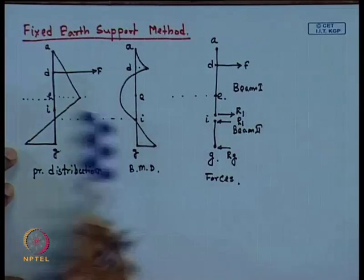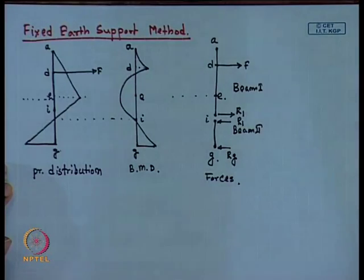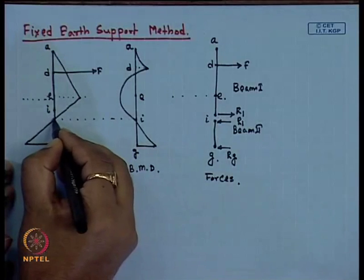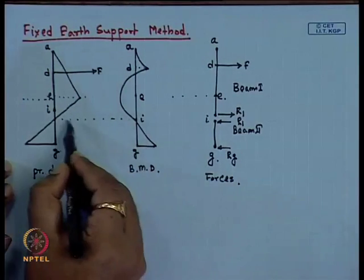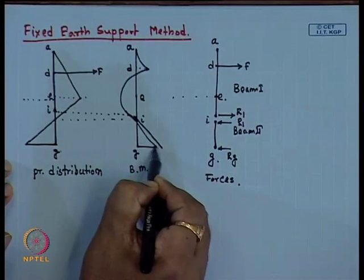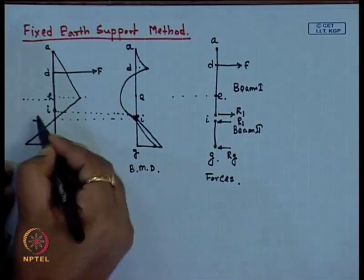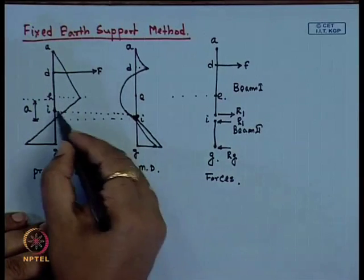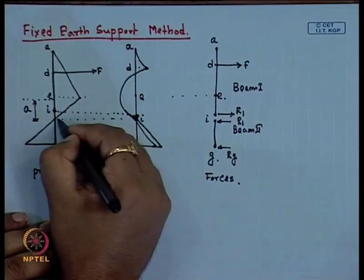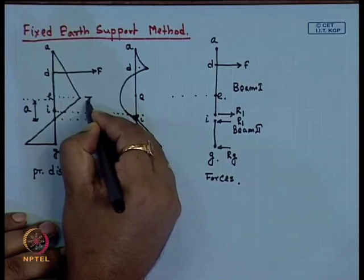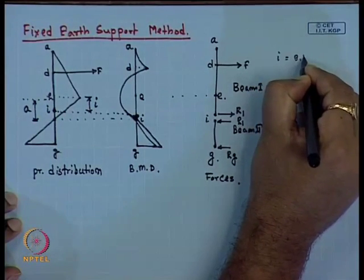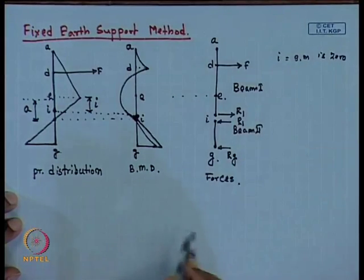Now we have to start the design of this method. One thing to notice is that the I point is where the bending moment is zero. This point is where value is A, and the I point is the point where bending moment is zero from the gauge level. So I is the point where bending moment is zero.